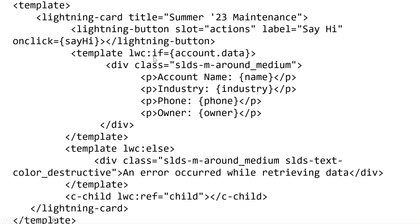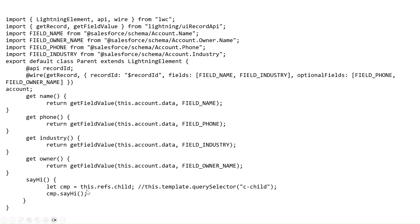All I did was lwc:if and lwc:else — right here. I removed the legacy else-if parts and added lwc:ref child right here. And in the parent JavaScript file, I added this.refs.child and commented out the old template querySelector section.